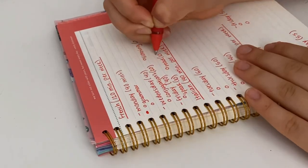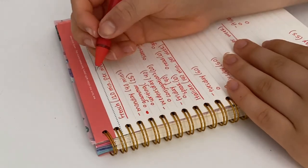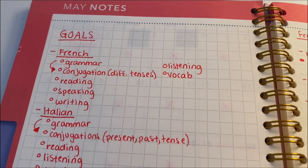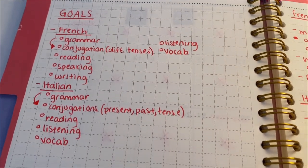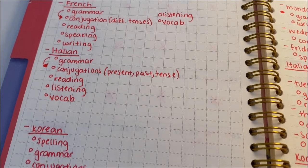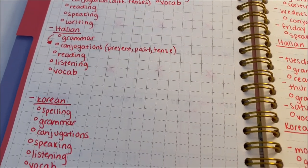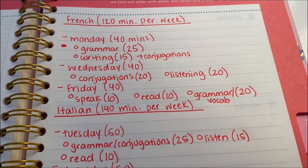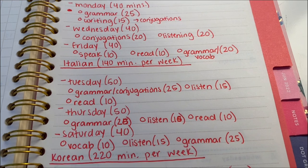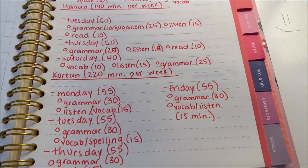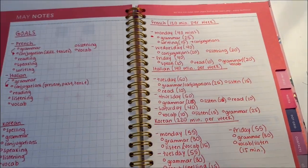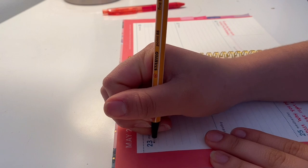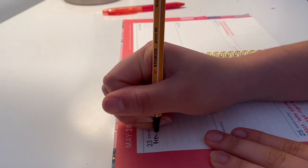For Italian I'm planning on focusing a lot on grammar and conjugations, mostly in the present, past, and future tenses, as well as reading, listening, and vocab. For Korean I'm also really focused on dedicating myself to spelling, Hangul, grammar, conjugation, speaking, listening, and vocab — and by listening I mean listening to videos, podcasts, or anything in those languages. Making goals is very important to have a clear focus for your study sessions.